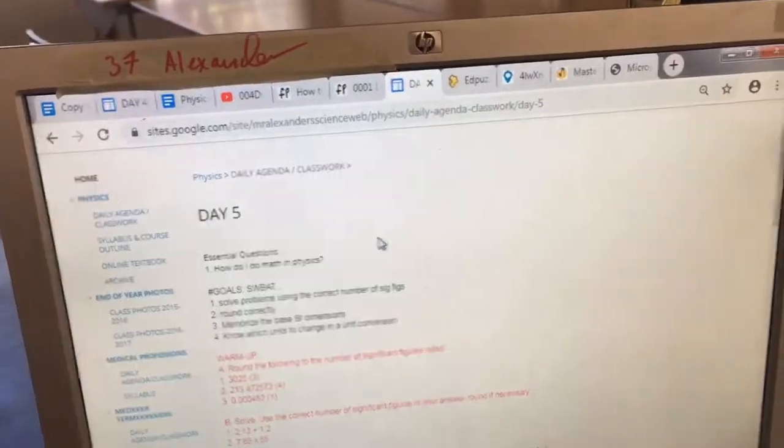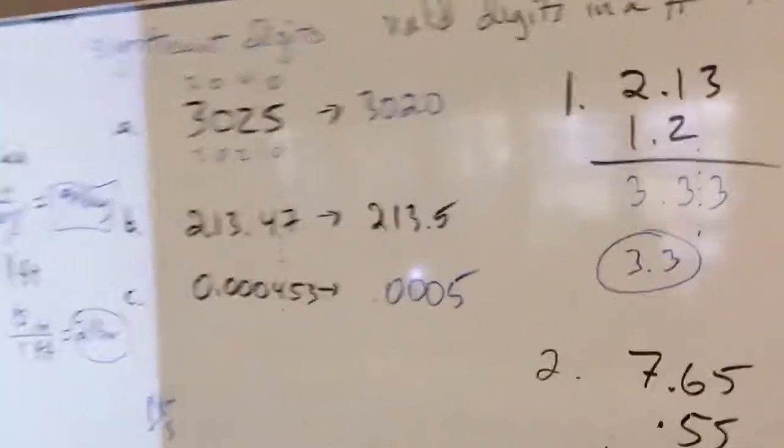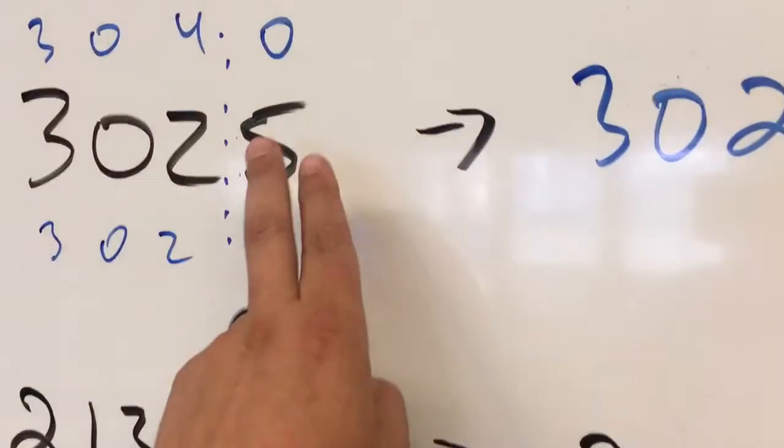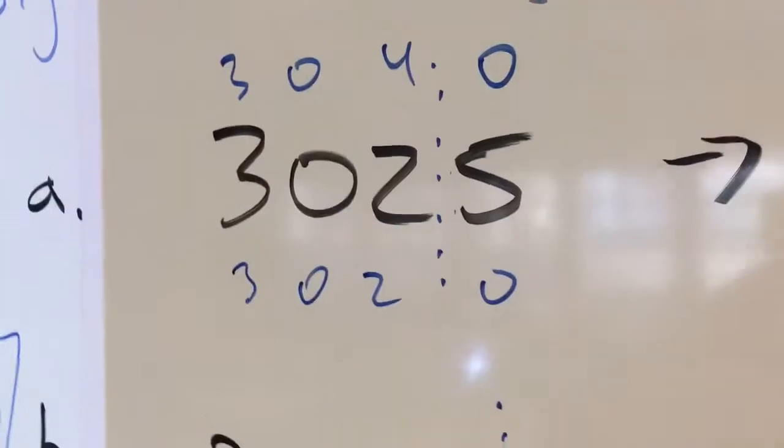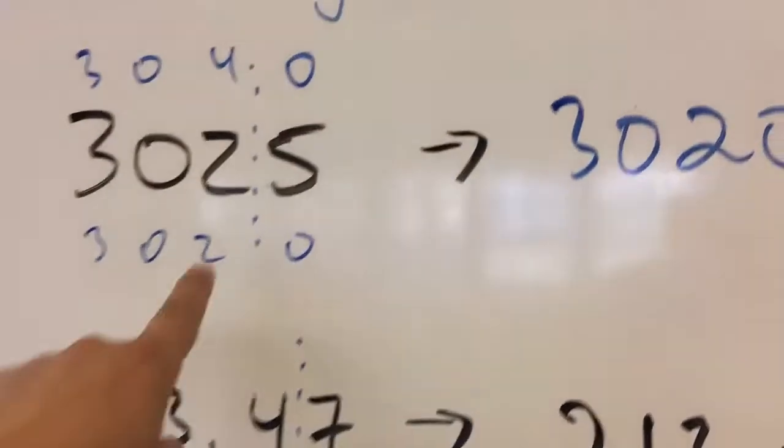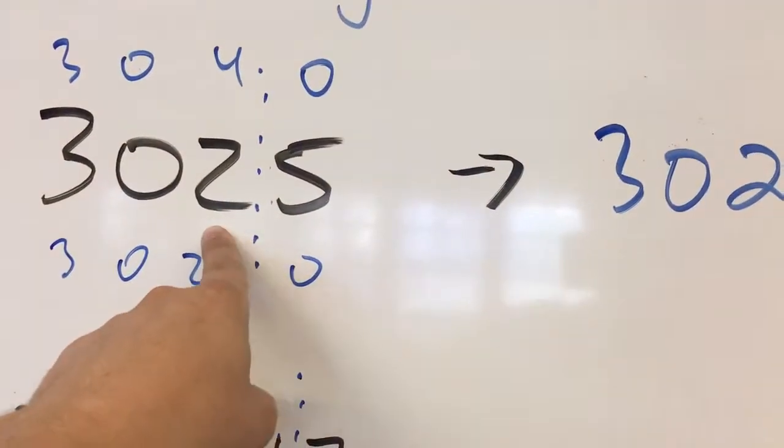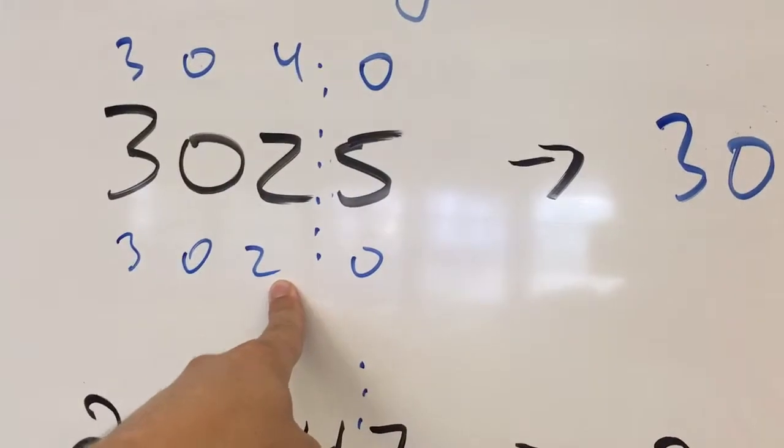Three thousand twenty-five to three significant digits. This is where you have to use the arcane rounding rule that Mr. P describes in the video. And so the answer is to actually round to the nearest even number, which means three thousand twenty is our answer.